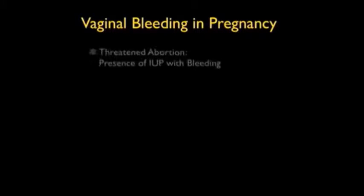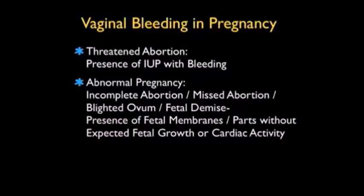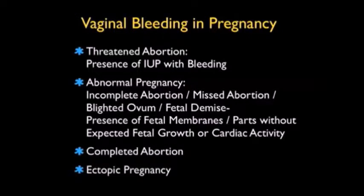When taking care of a patient with vaginal bleeding in pregnancy, there are four main classifications of diagnoses. The first is a threatened abortion — the presence of an intrauterine pregnancy with bleeding. The second encompasses incomplete abortion, missed abortion, blighted ovum, and fetal demise — all meaning fetal membranes or parts without expected fetal growth or cardiac activity. The third is a completed abortion with no further fetal membranes or parts and a closed cervical os. The fourth, and most dangerous, is ectopic pregnancy.